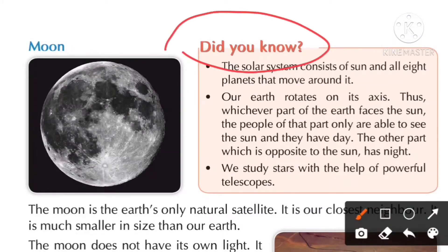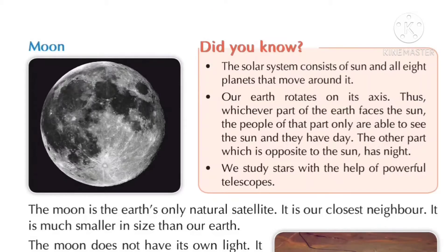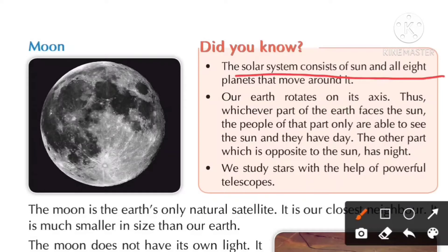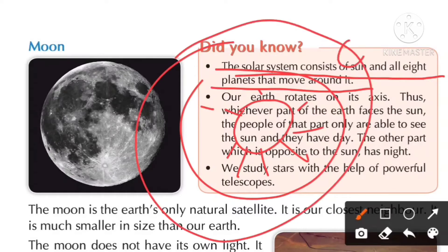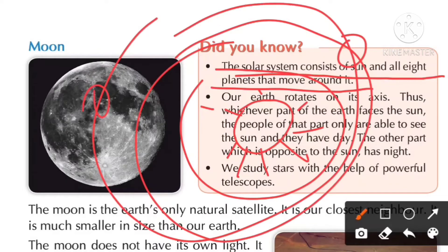Did you know the solar system consists of the sun and all eight planets that move around it? As you all know there are eight planets, and around the sun there are eight planets which revolve around it.